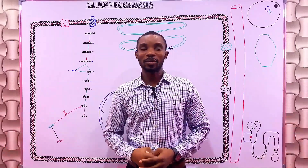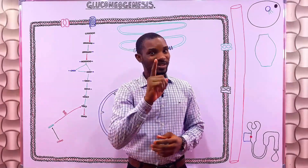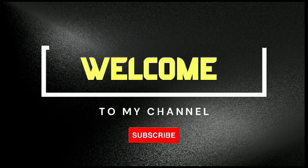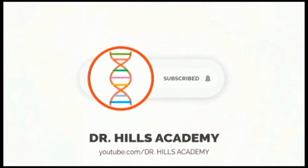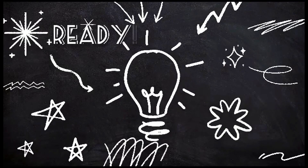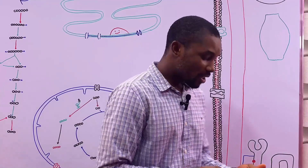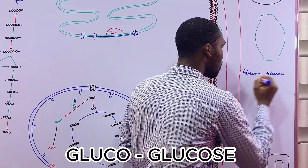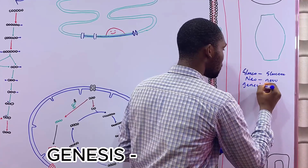Hello guys, welcome back to Dr. His Academy. Today we'll be discussing an important aspect of carbohydrate metabolism known as gluconeogenesis. Gluconeogenesis is the formation of new glucose molecules from other sources. You can break down the word: 'gluco' for glucose, 'neo' for new, and 'genesis' for formation.